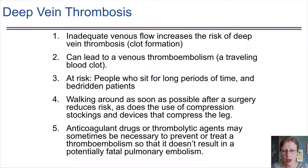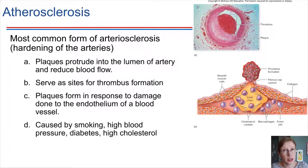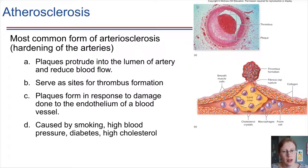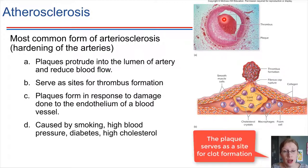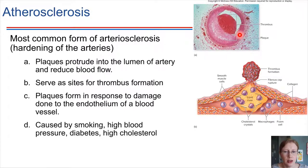The last blood vessel problem to discuss is atherosclerosis, which refers to hardening of the arteries. This can happen due to buildup of plaques in the blood vessels. Here's a picture showing a blood vessel with plaque buildup and a clot — a thrombus — piled on top. If this gets much larger, it will completely cut off blood flow.